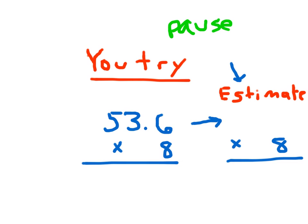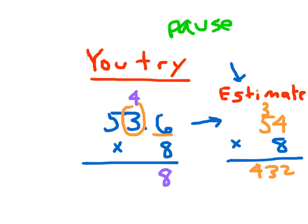I had asked you to start with your estimate first. 53 and 6 tenths rounded to the nearest whole number — look at the tenths place — it's 54. Let's do that product: 8 times 5 is 40, plus 3 is 43, so 432 is my estimated answer for the product of 53 and 6 tenths times 8. My actual answer: 8 times 6 is 48, ignoring the decimal point. 8 times 3 is 24, plus 4 is 28, write 8 and regroup 2. 8 times 5 is 40, plus 2 is 42. I look at my estimate — I want a number in the 432 range — so I place my decimal point right here in between those two 8s.